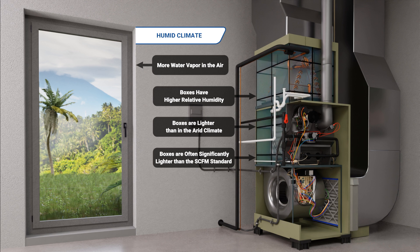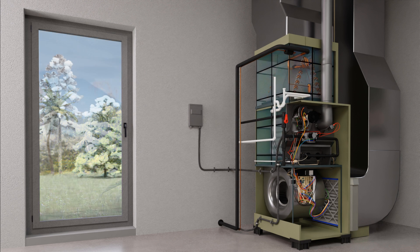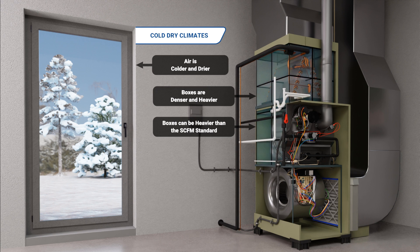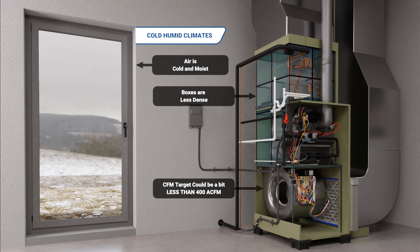An HVAC system could actually have a target of more like 405 or 410 ACFM to hit the same mass flow rate, or pounds of air per minute, over the coil. But we also may have a much lower target than that if we are trying to run a cold evaporator coil on purpose to remove more moisture from the air — you see how complicated this gets. In cold, dry climates, the air is heavier because it is colder and drier, making the boxes denser. These boxes could potentially be heavier than those that fit the SCFM standard, and an HVAC system could have a target of less than 400 ACFM. Compared to cold, dry air, the moist air of cool, humid climates is less dense due to the water vapor content, so you can expect the target ACFM to be a bit higher — again, if the goal is to maintain a consistent pounds per minute of air over the evaporator coil.